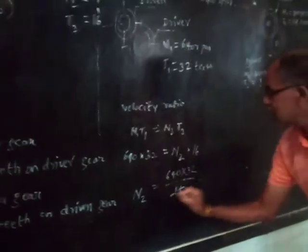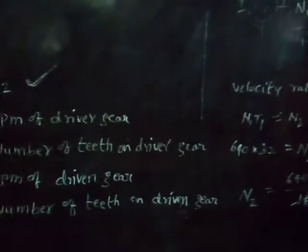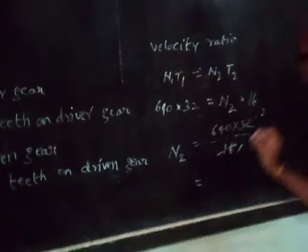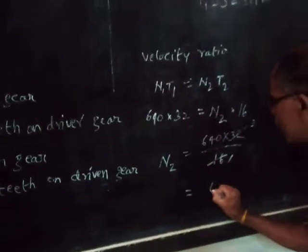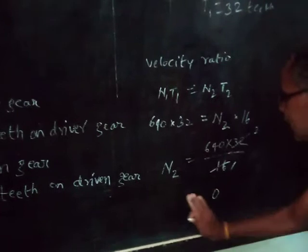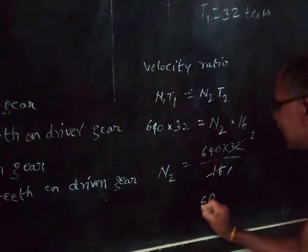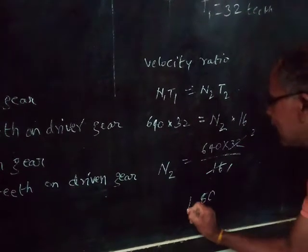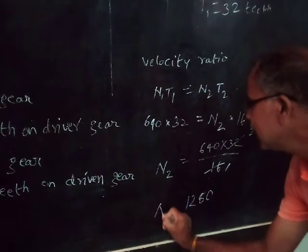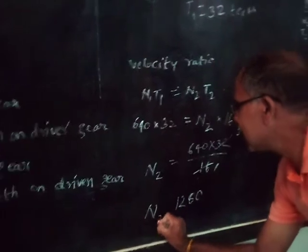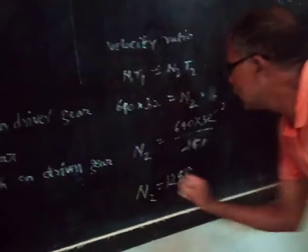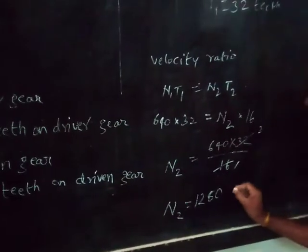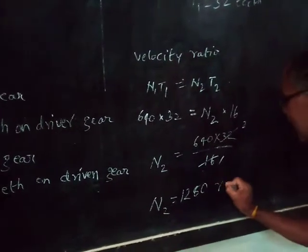N2 equals 640 into 32, divided by 16. Solving this: N2 equals 1,280 RPM. This is the RPM of the driven gear.